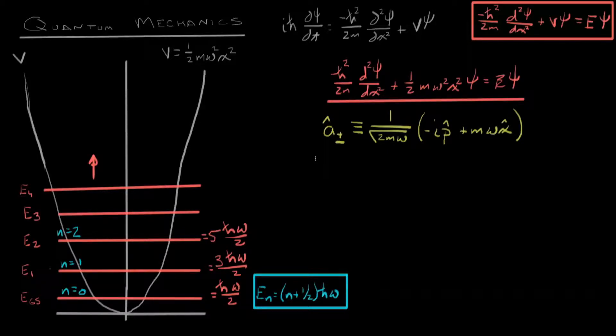That's A plus, which is very similar to the down ladder operator, which is A minus, and instead of negative IP, we say positive IP, where P hat is the momentum operator and X hat is the position operator.